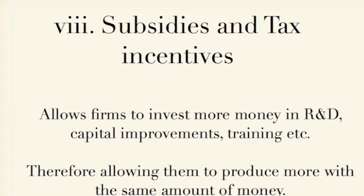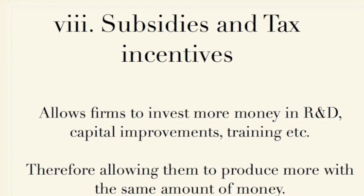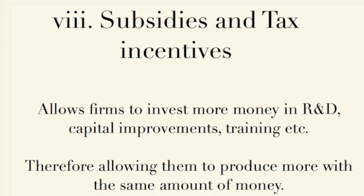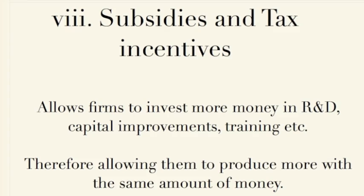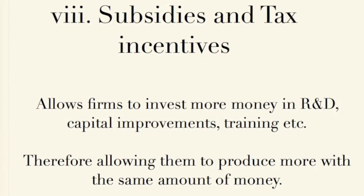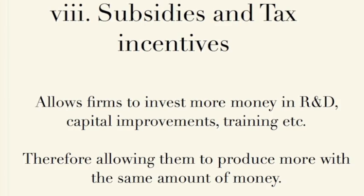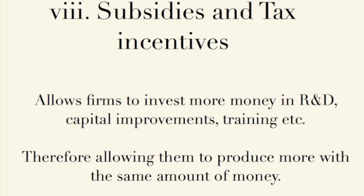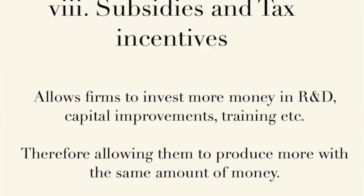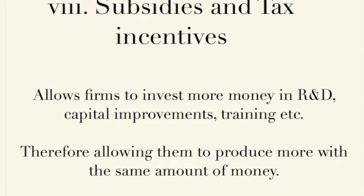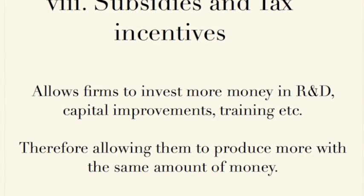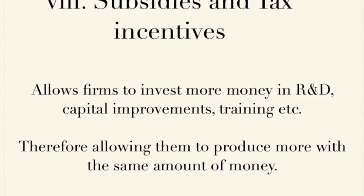The last interventionist policy is subsidies and tax incentives. This is different from reducing tax because when you reduce tax, government revenue and spending decrease. When you provide tax incentives and subsidies, government spending actually increases. It works by allowing firms to have more money to invest in research, development, training, and capital improvements, so they can produce more, increasing aggregate supply. The problems again include inflationary pressures, high cost, opportunity cost, and time lags — particularly in sectors like agriculture. There is also the risk that if inefficient firms are given money and allowed to remain inefficient, there can be a misallocation of resources.